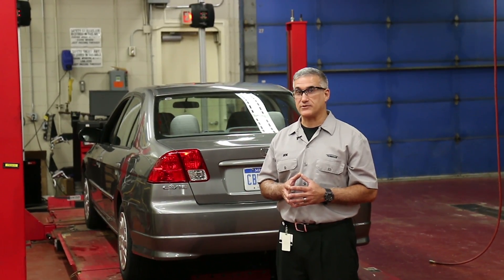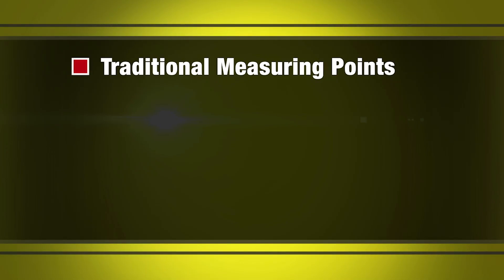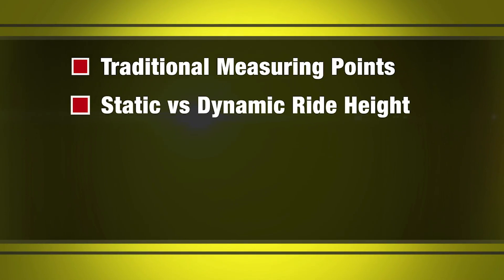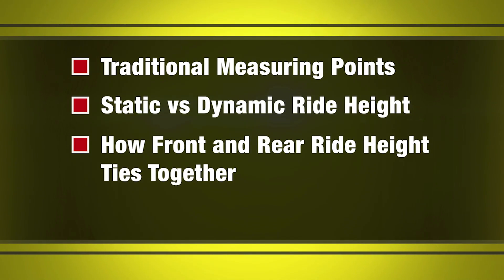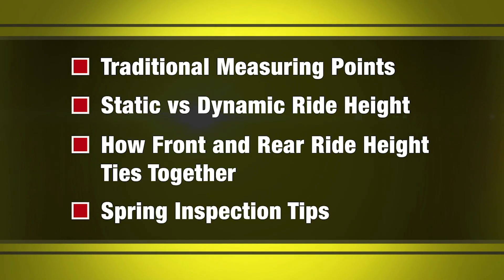In this video we're going to accomplish four things. We're going to cover the different measuring points traditionally used, and a quick reference check for vehicles where ride height specs are not available. Next we'll discuss the differences between static and dynamic ride height and how to apply this knowledge during the inspection process. We'll also cover common mistakes made when diagnosing ride height concerns, how the front and rear of the vehicle are linked together, and how to determine what corner of a vehicle is causing a ride height concern. And we will identify a few inspection tips that will help you quickly determine if a vehicle's springs need to be replaced.